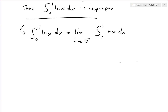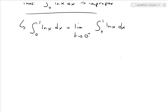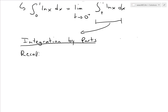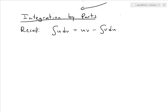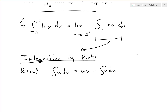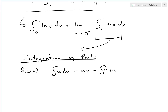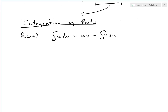Now we have to solve this definite integral from t to 1 of ln(x) dx, as opposed to starting from 0 where the asymptote is. To solve this, we use integration by parts — I also covered this in an earlier video. Recall that the integral of u dv equals uv minus the integral of v du. The reason we use this is because integrating ln(x) directly is not straightforward, but we know the derivative of ln(x) is 1/x, which simplifies things.